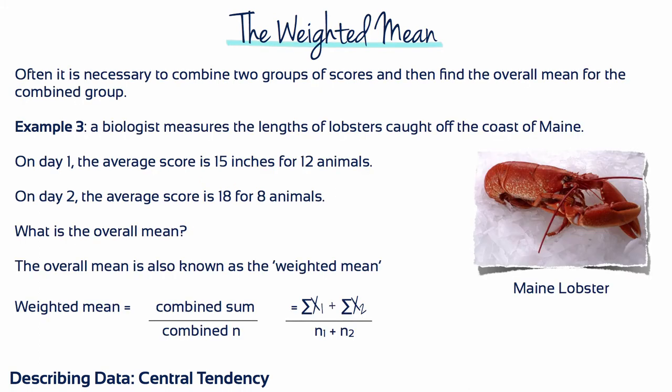Often it's necessary to combine two sets of scores and then find the overall mean for the combined group. In example three, a biologist measures the length of lobsters cut off the coast of Maine. On day one, the average score is 15 inches for 12 animals. On day two, the average score is 18 for eight animals. What's the overall mean?